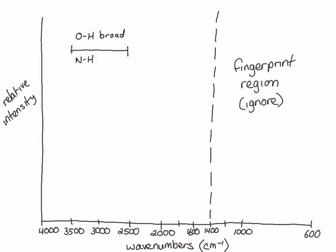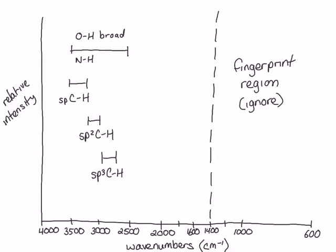Other stretches that show up in this region are due to carbon-hydrogen bonds. C-H bonds involving an SP hybridized carbon show up between 3500 and 3300 wavenumbers. C-H bonds involving an SP2 hybridized carbon show up between 3100 and 3000 wavenumbers. C-H bonds involving an SP3 hybridized carbon show up below 3000 wavenumbers, in the range of 3000 to 2800 wavenumbers. As we go from SP3 to SP hybridization, the percent S character increases. Because S orbitals are small and centered around the nucleus, bonds made with orbitals higher in S character are stronger, meaning higher energy and higher frequency.